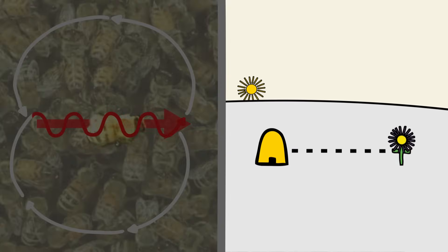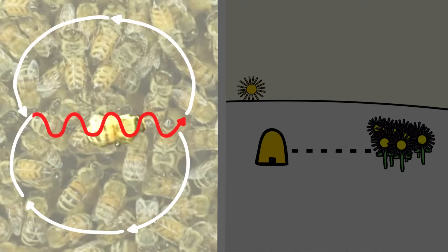Other information such as quality or abundance of food might also be encoded within other parameters of the dance or in pheromones released by the bee.